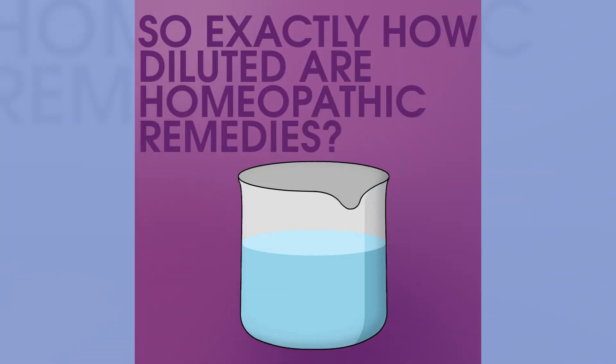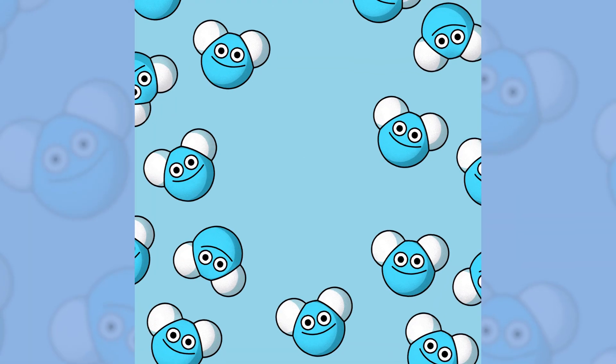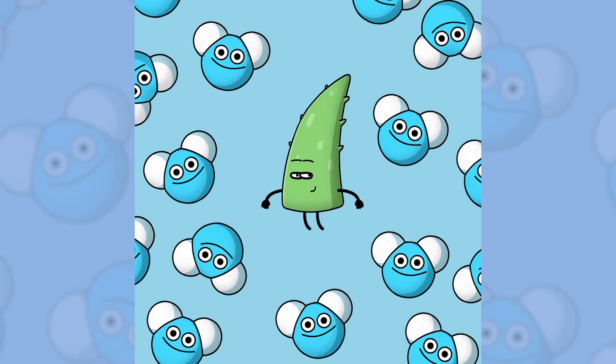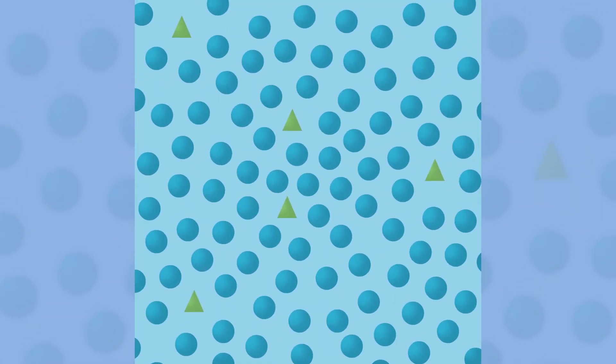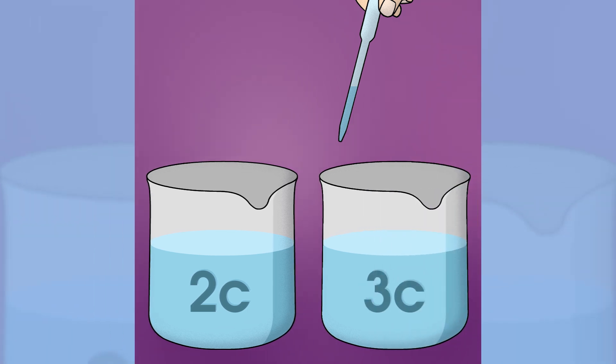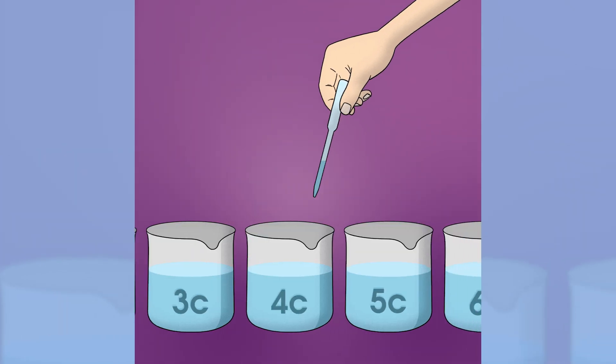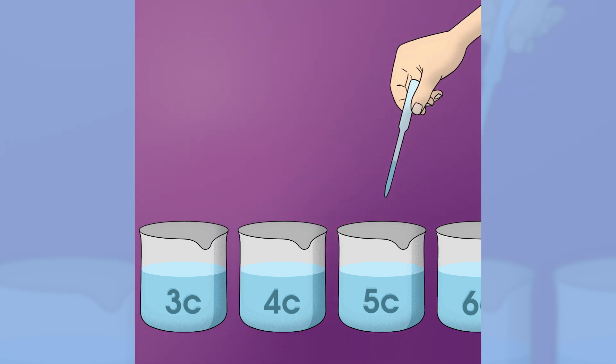So exactly how diluted are homeopathic remedies? At each stage, a homeopathic solution is diluted by a hundred times. This is represented by the number and C symbol you'll see on a homeopathic remedy. So a solution that says 2C has been diluted by 100 times, and then that solution has been diluted by another hundred times. A 6C solution has had this process repeated six times.